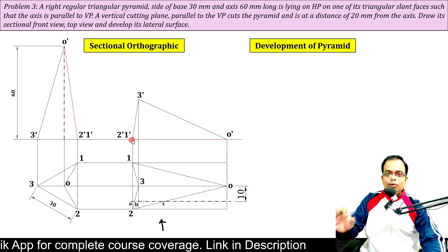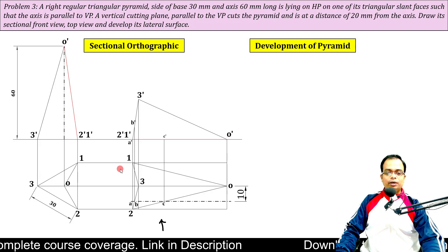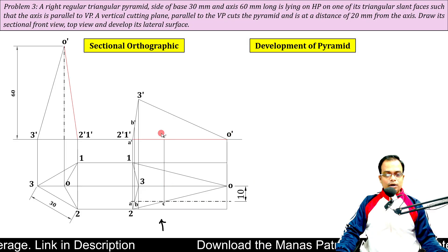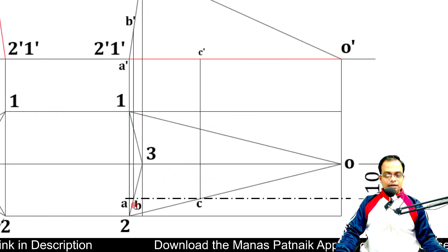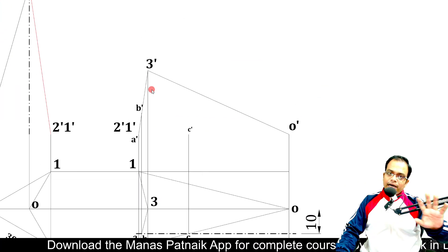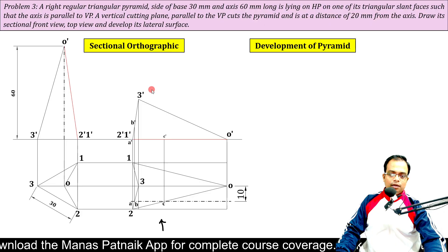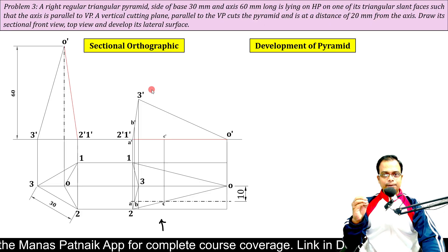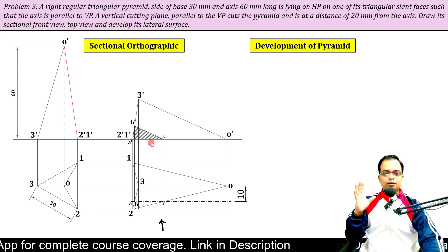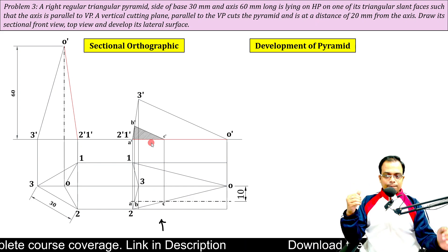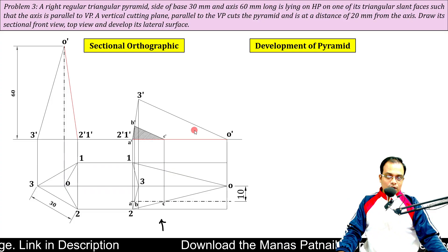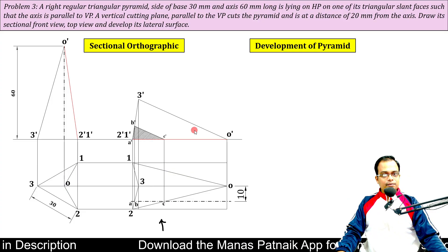What looked like a line in the top view no longer looks like a line — it becomes a point. We mark A' there. Similarly, C' appears between O'-2', and B' appears between 2'-3'. When you join all of these cutting points you have the section. Now let's talk about developing the solid portion that is remaining.